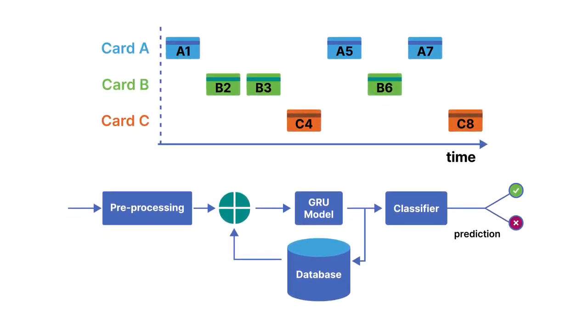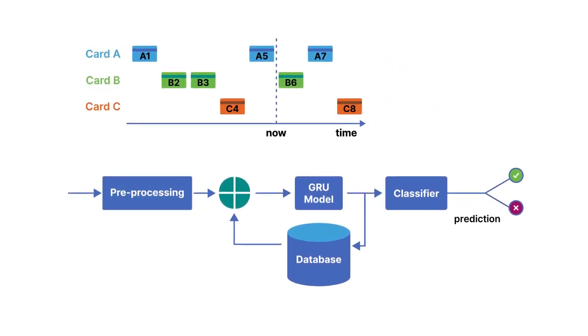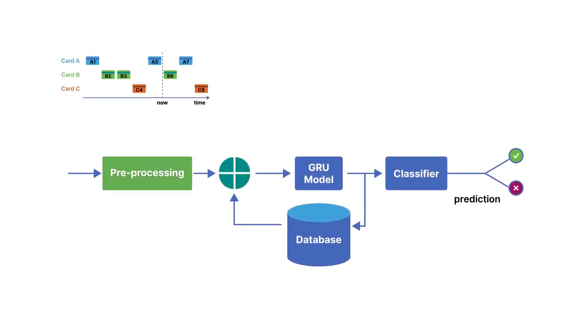For instance, imagine that we've just processed 5 transactions from 3 different cards, and that we are now handling transaction 6. To score transaction 6, we start by making some pre-processing that transforms the transaction into inputs that the model can handle.